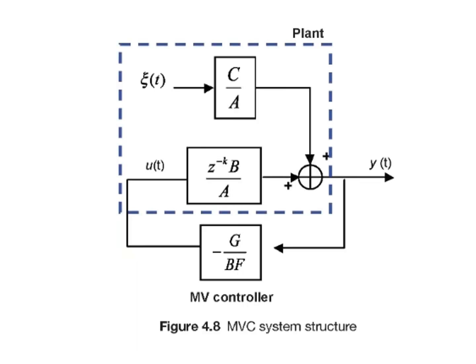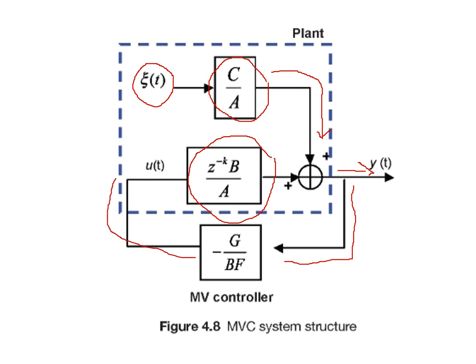The design procedure for MVC is summarized as follows. Step one: solve for F and G using A·F plus z^(-k)·G equals C. Step two: design the controller u(t) equals minus G over (B·F) times y(t). Step three: calculate the minimum output variance using J_min. The structure of the MVC uses the feedforward transfer function C over A, the plant transfer function z^(-k)·B over A, and the feedback controller transfer function minus G over (B·F).